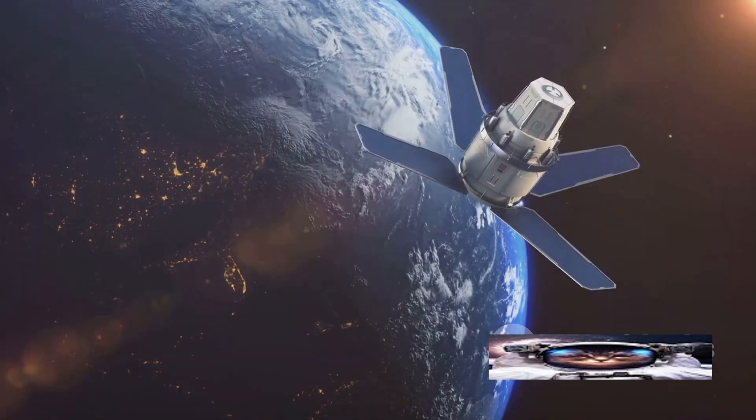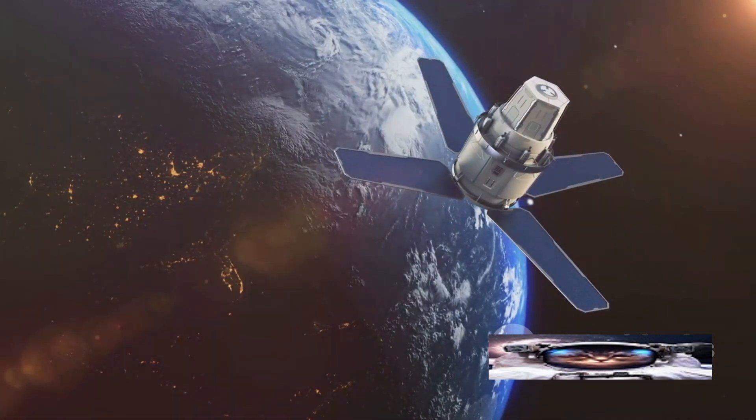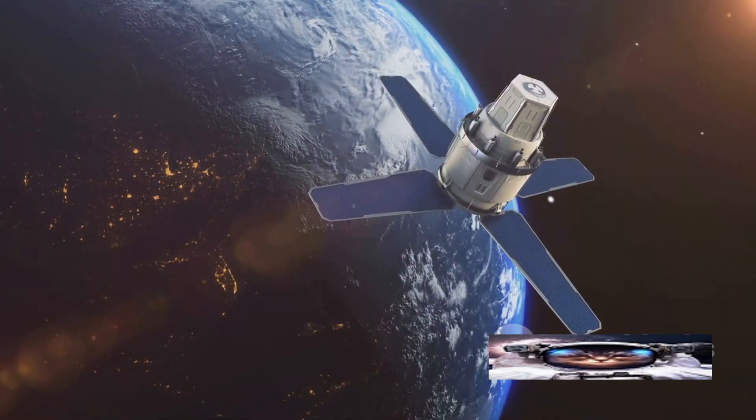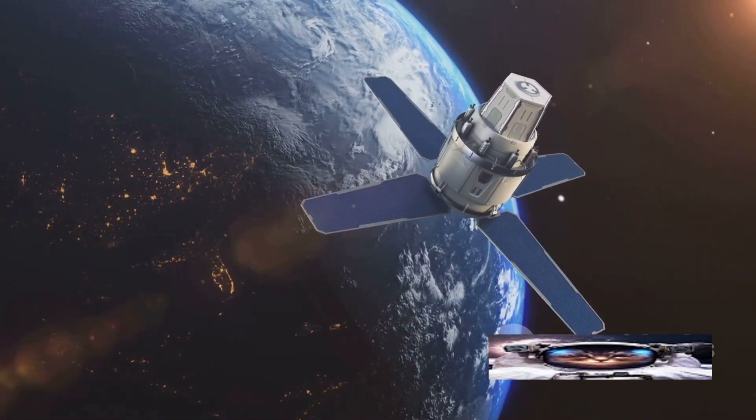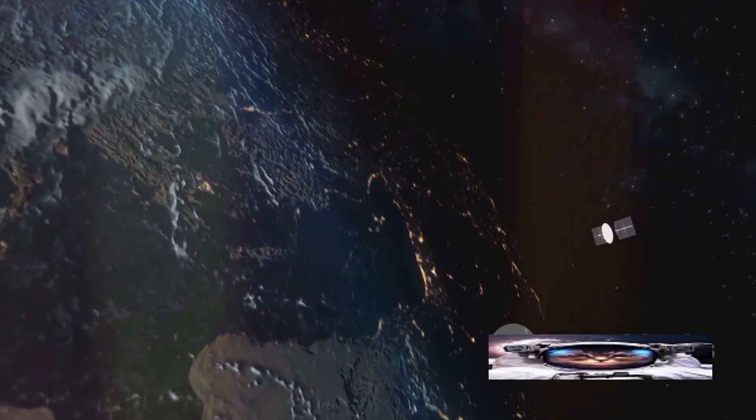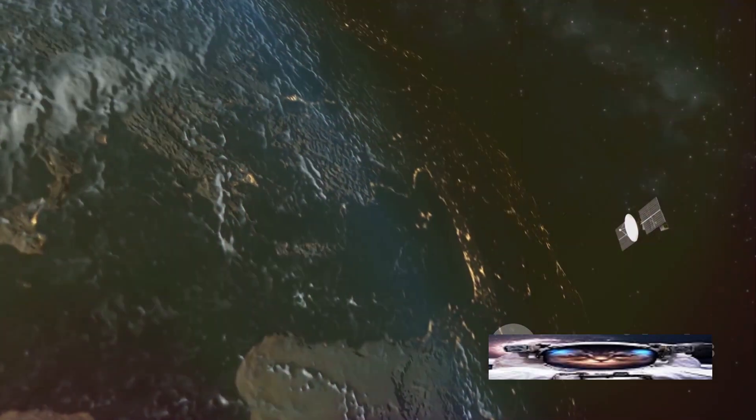So, how do these satellites work? At its core, a satellite is a complex piece of technology packed with sensors and instruments designed to capture and transmit data back to Earth. They circle our planet in various orbits, each designed to optimize the satellite's function.